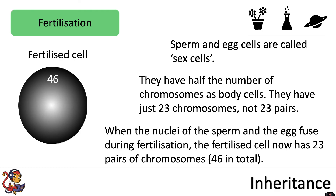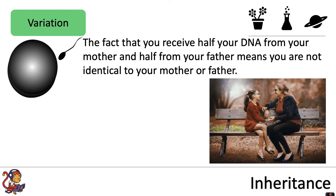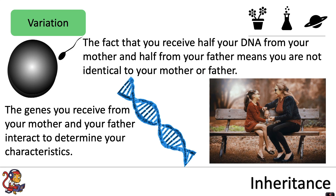That cell will then divide again and again and again, so all of the cells within the baby will have 46 chromosomes — half from the mother and half from the father — all carrying those genes which will determine the characteristics of the baby. The fact that you receive half of your DNA from your mother and half from your father means you are not identical to either your mother or your father. The genes you receive from your mother and father interact to determine your characteristics.